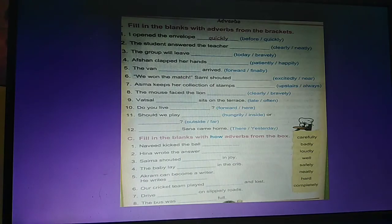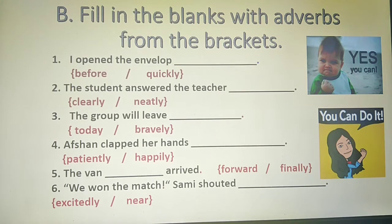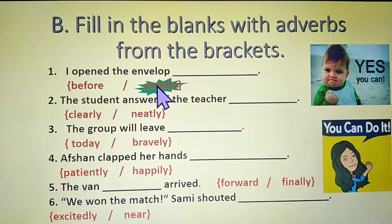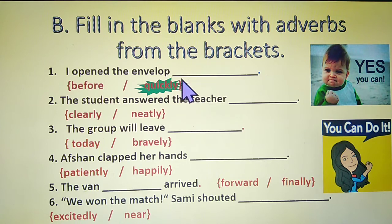Students, now we are going to do exercise number B in page number 46 — fill in the blanks with adverbs from the brackets. The first question: I opened the envelope — before or quickly? I opened the envelope quickly. Quickly is the adverb; it describes the verb open. Students, please underline or circle the word quickly in the bracket and write quickly in the blank.